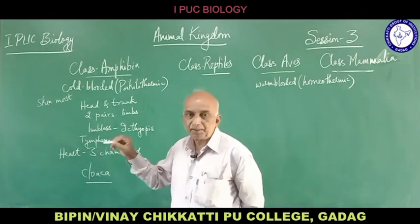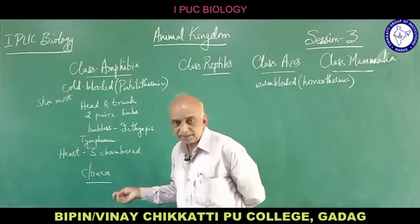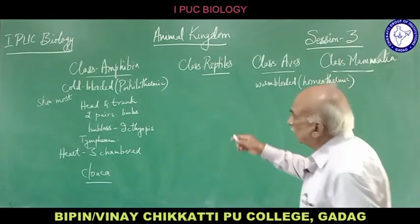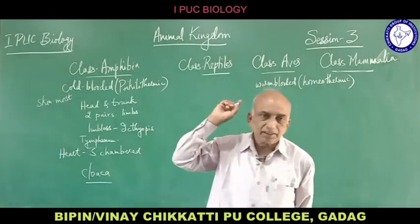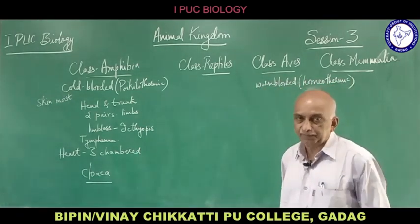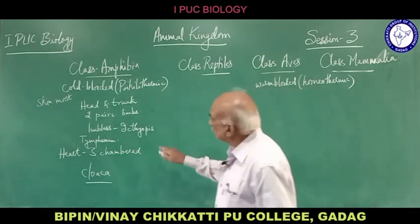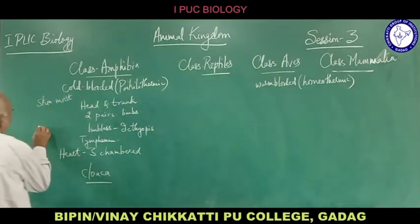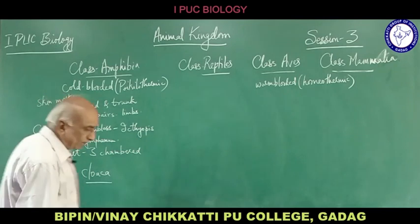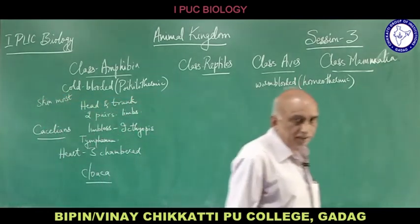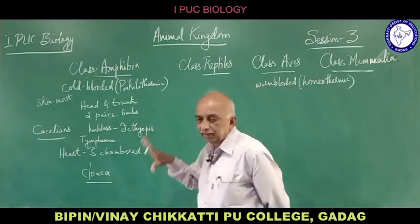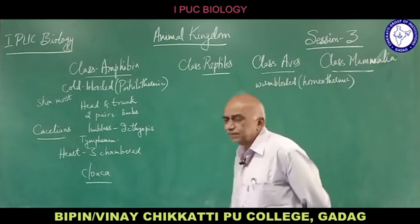Class Amphibia includes frog, salamander, toads, and the limbless Ichthyophis. Limbless amphibians are sometimes called Caecilians. This concludes class Amphibia. Class Reptilia includes lizard, snakes and crocodile. They are also cold-blooded animals.